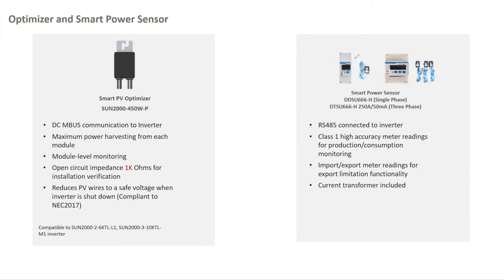By having a full optimizer solution — optimizers on all PV modules — you can implement a rapid shutdown function. In less than 40 seconds, the system goes to zero volts on the DC side, compliant with the most strict standard in the industry: the American standard NEC 2017. For the power meters, we have single-phase and three-phase versions. They communicate with the inverter via RS-485, have Class 1 accuracy, and the current transformers are included.